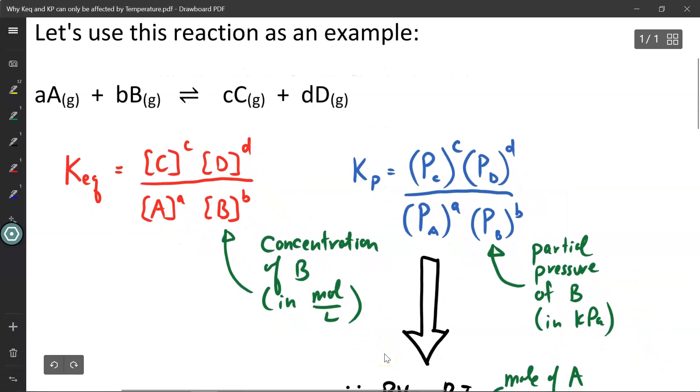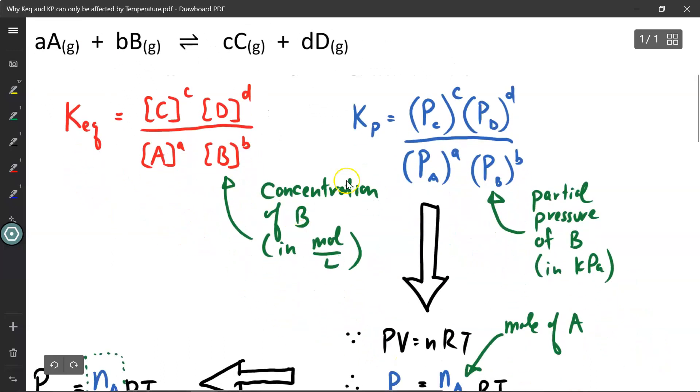Over here we have Kp. Kp is also an equilibrium constant, but instead of measuring it in moles per liter, we're going to measure it based on the partial pressures of each gas measured in kPa. As a reminder, Keq and Kp do not have to be the same value. They might be, it might be a fluke, but they do represent the same thing. Although they might not be the same number, they do represent the same thing, whether the reaction is overall product favored or overall reactant favored.